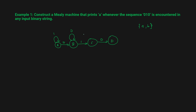In state C, on input 0 you go to D, and on input 1 you go back to state A. For state D, on input 0 you go to state B — for example, in the string 0 1 0 0 1 0, after reaching D you get another 0 and go to B, then 1 to C, then 0 back to D. And if you get input 1 in state D, you go back to state A.